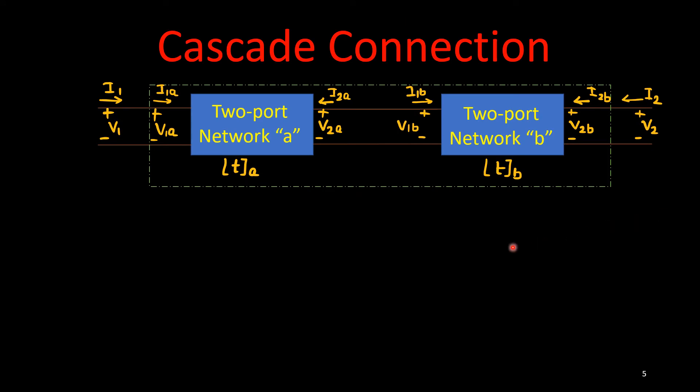So, this cascading connection of two port networks, here the network A for that it is T-A, network B it is T-B, then total T network for this one we can write by this property as T equals to or T equivalent I can say, T-A multiplication with T-B. So, you should keep the same order, first T-A then T-B.